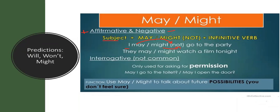The interrogative form of may is not very common — we don't really use it much. We only use it for asking for permission. For example: 'May I go to the toilet?', 'May I open the door?', 'May I stand up?', 'May I go to drink water?' We use may for this — we do not use might.